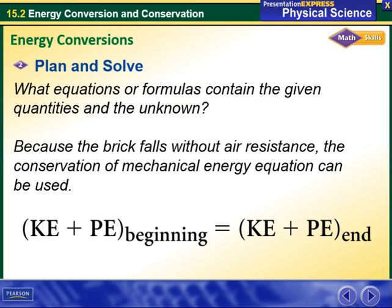So we are going to write our equation, which is kinetic energy plus PE at the beginning will always equal KE and potential energy at the end.